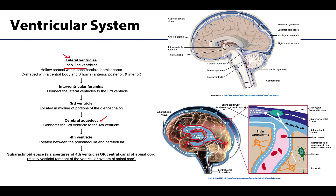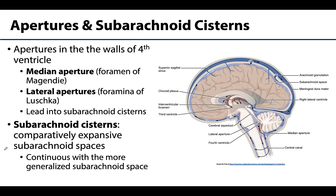The fourth ventricle is located between the brainstem — specifically the pons and medulla — and the cerebellum. It is the most distal ventricle, and from here the majority of CSF moves into the subarachnoid space via small openings or apertures in the ventricular wall. A small amount also continues into the central canal of the spinal cord, which is a vestigial remnant of the ventricular system that gradually peters out more distally along the spinal cord.